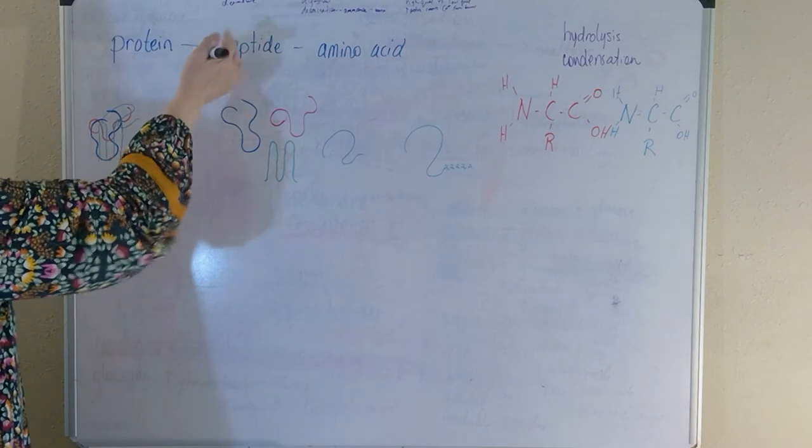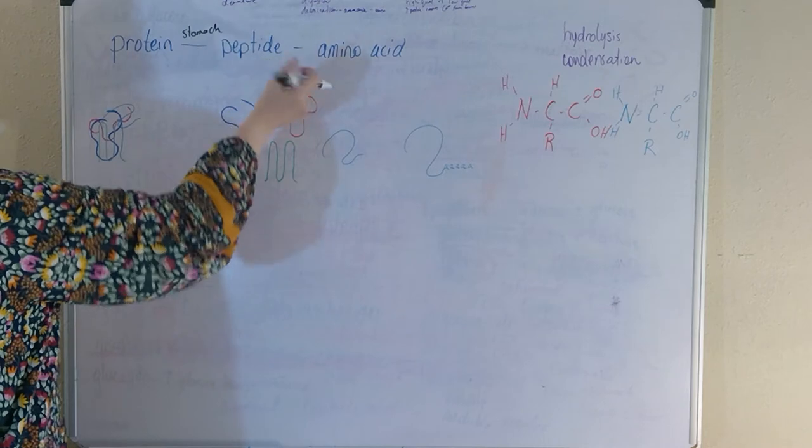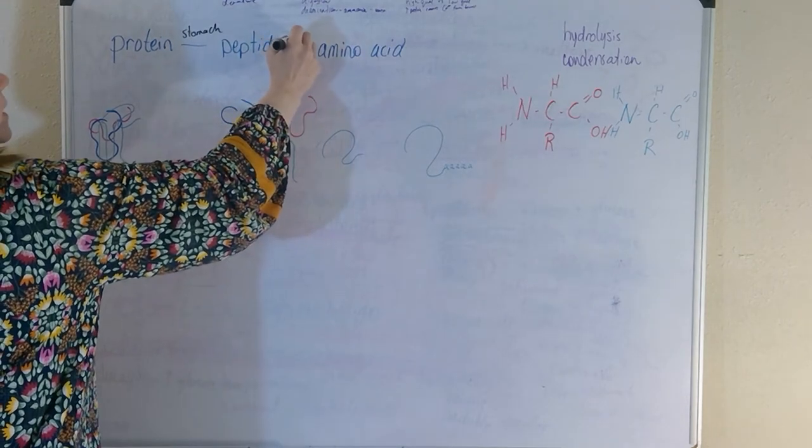In digestion, proteins to peptides will occur in the stomach. And then the peptides to amino acids occurs in the small intestines.